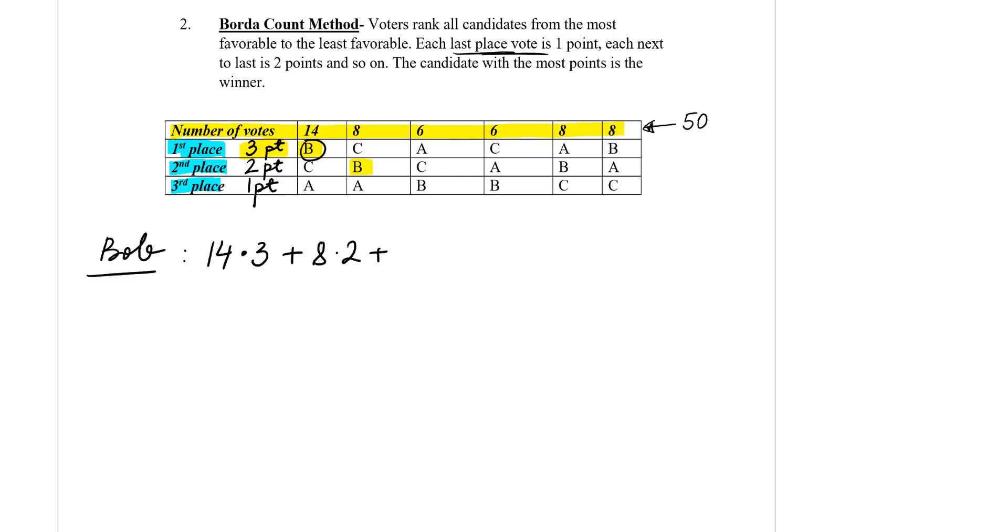Plus Bob has six votes on the third place, so it's times one point. Then Bob has six votes times one point, plus Bob has eight votes on the second place, so we put two points.